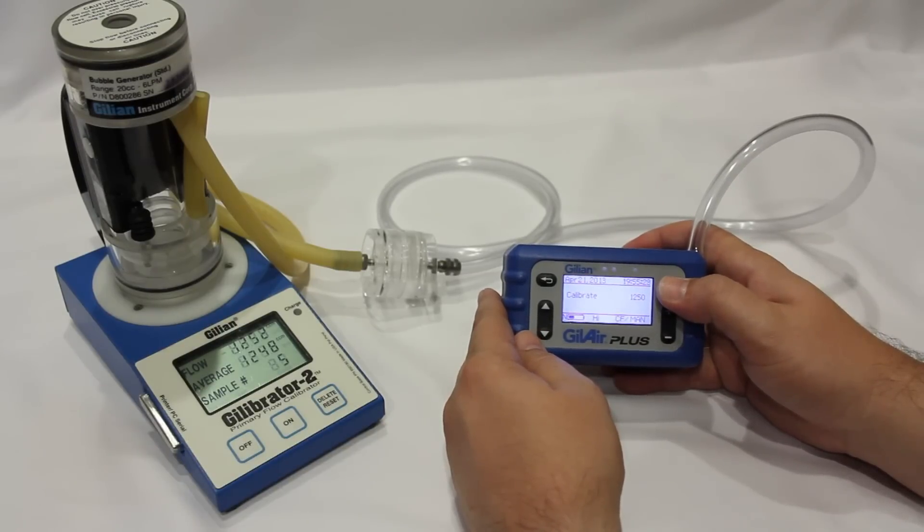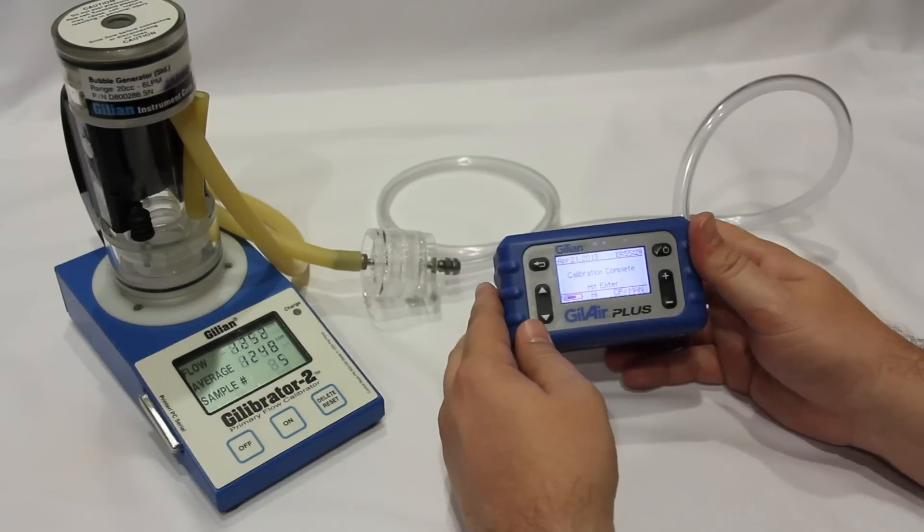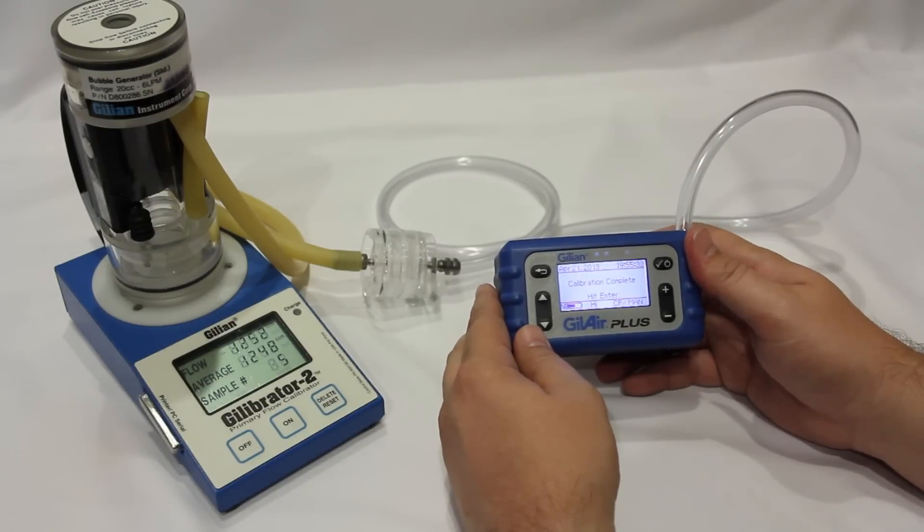Once the flow rates match, press enter to accept the calibration, or escape to go back. In this case, we'll press enter and accept the calibration.